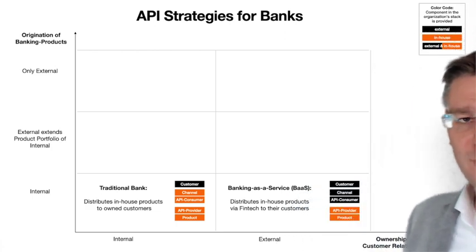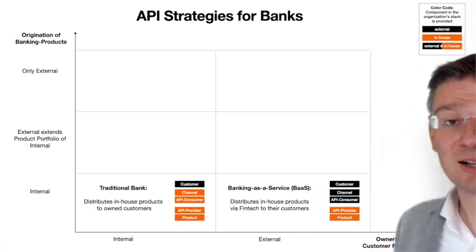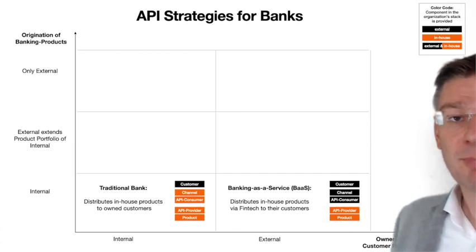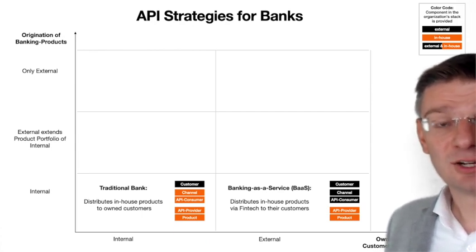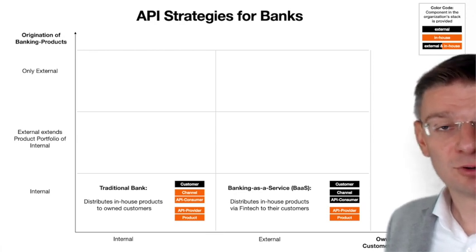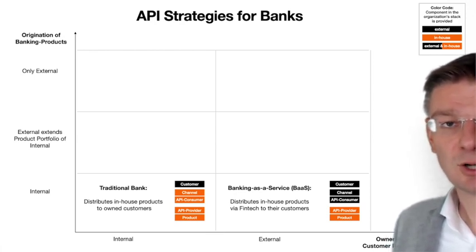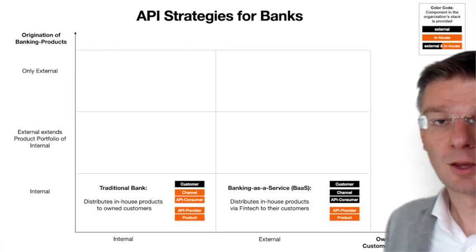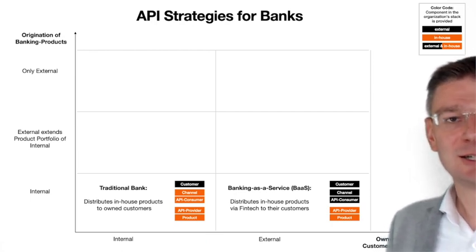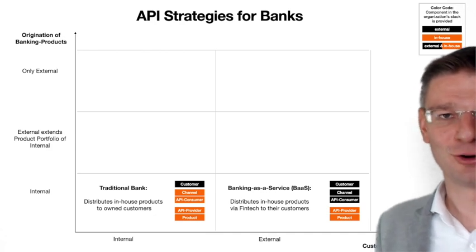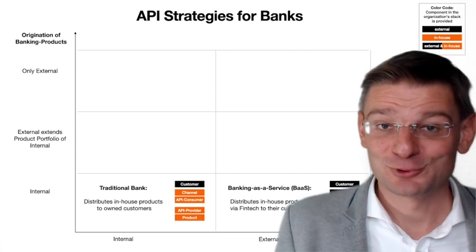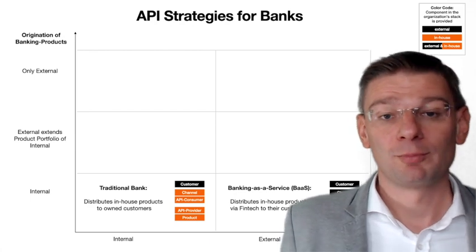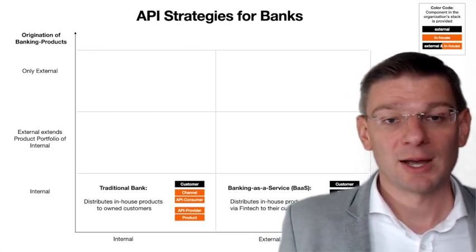One of the ways you can reconfigure the stack is by removing the channel and giving the channel to someone else outside the bank. If you do that, you have banking as a service, and you enable this niche market — very personalized, tailored experiences, the long-tail market. Such banks typically don't do this in their home market. Where they already have a channel to their customers, banks sometimes offer banking as a service products outside their home market.